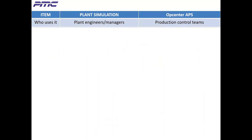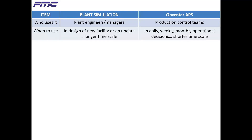Our first question is who uses it? Mainly plant engineers and managers use Plant Simulation, while production control teams use the OpCenter APS scheduling tool. Usually Plant Simulation is used on a longer time scale during the design of a new facility or an update — the earlier the better — while OpCenter APS is used on a shorter time scale to make daily, weekly, or monthly operational decisions.